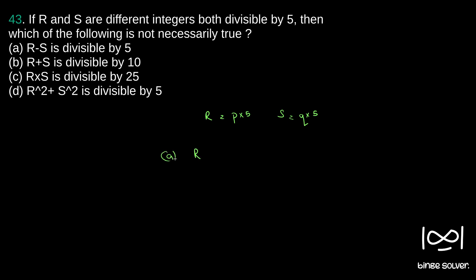Now, which of the following is not necessarily true? We will consider each statement. First, R minus S is divisible by 5. R minus S becomes P into 5 minus Q into 5, which we can write as 5 into (P minus Q). So R minus S will be divisible by 5, as P minus Q is some integer. Therefore, A is true, and A is not the answer.